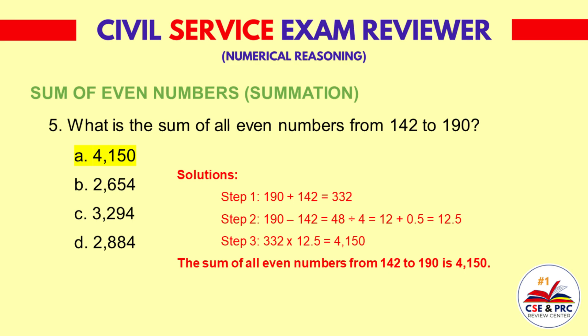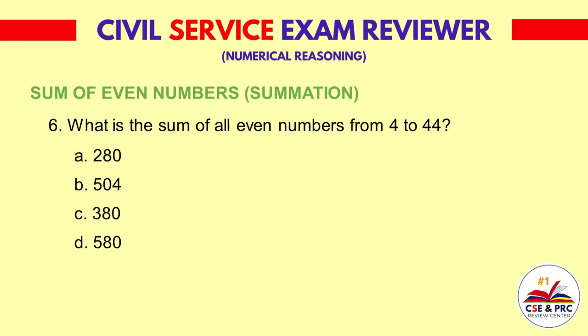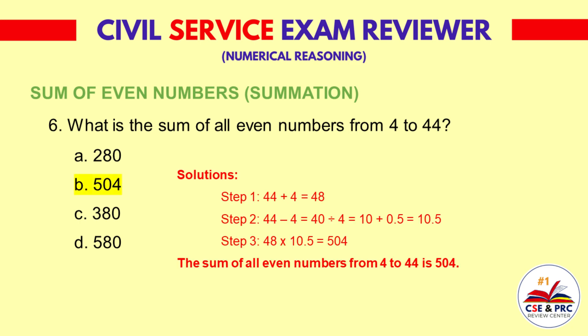Question 6: What is the sum of all even numbers from 4 to 44? a. 280  b. 504  c. 380  d. 580. The answer is b. 504.